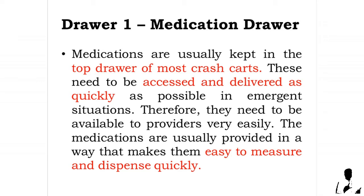Drawer 1 is the medication drawer. Medications are usually kept in the top drawer of most crash carts. These need to be accessed and delivered as quickly as possible in emergent situations, therefore they need to be available to providers very easily. The medications are usually provided in a way that makes them easy to measure and dispense quickly.